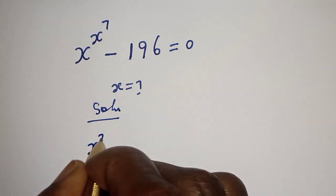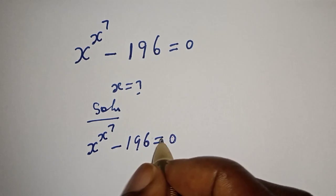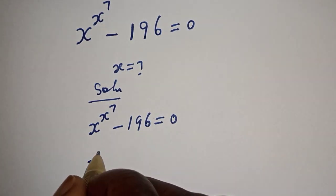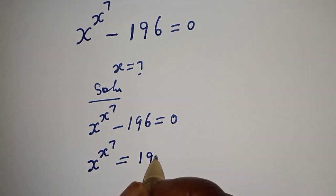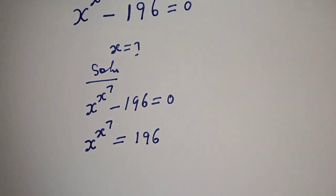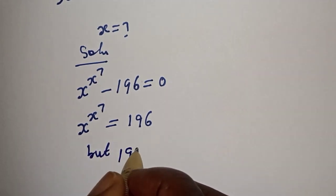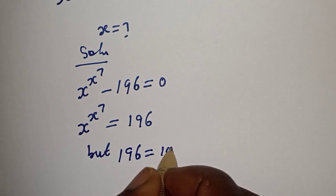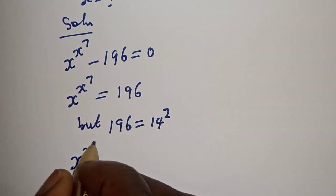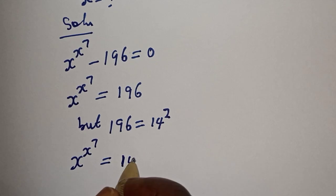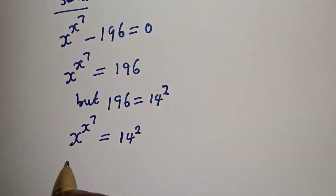We have S raised to power S raised to power 7 minus 196 is equal to 0. S raised to power S raised to power 7 is equal to 196, if we take this to the other side. Now, 196 is equal to 14 squared. So S raised to power S raised to power 7 is equal to 14 squared. Let's multiply the exponent of both sides by 7.